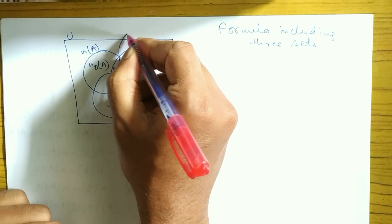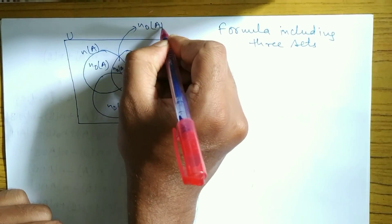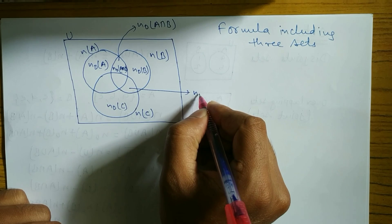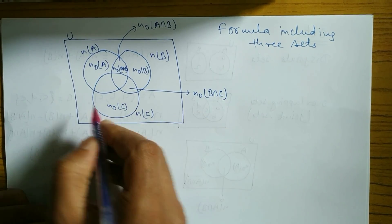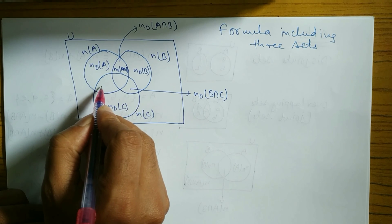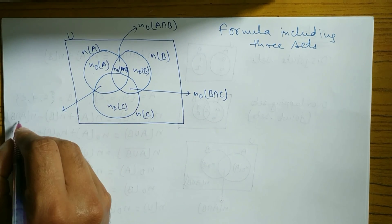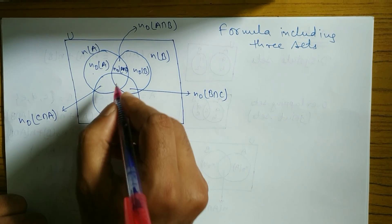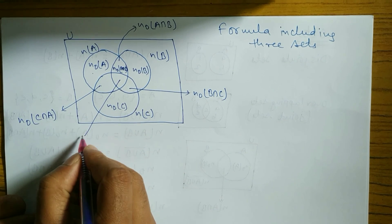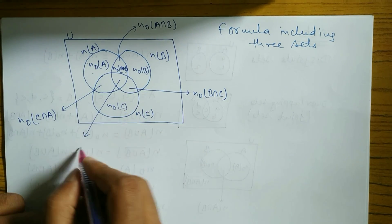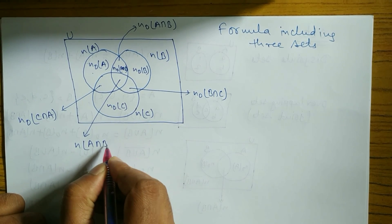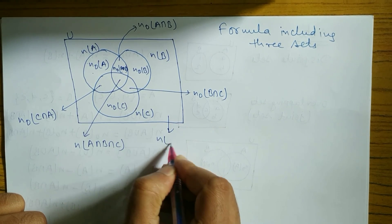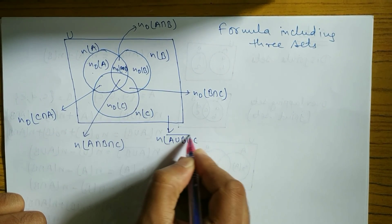This part is known as n(only A∩B), this part is known as n(only B∩C), and this part is known as n(only A∩C) or n(only C∩A). The middle part, common to all three sets, is known as n(A∩B∩C). The outer part is known as n(A∪B∪C) complement.